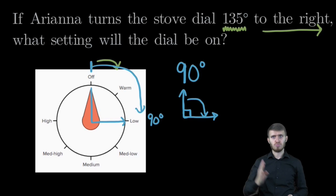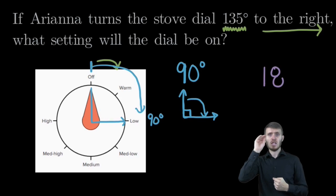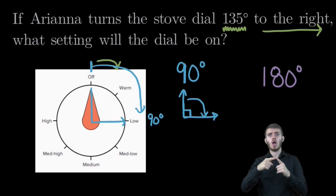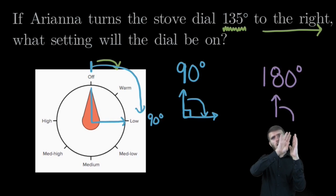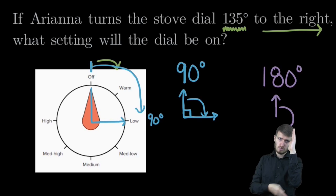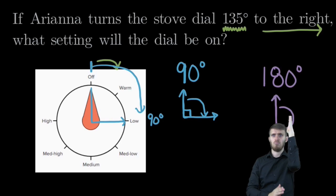Another angle I could use to help me is a straight angle, 180 degrees. A 180-degree angle, again, starts at the top like our knob is currently, like our dial. It will go all the way around until we have a straight angle like this.